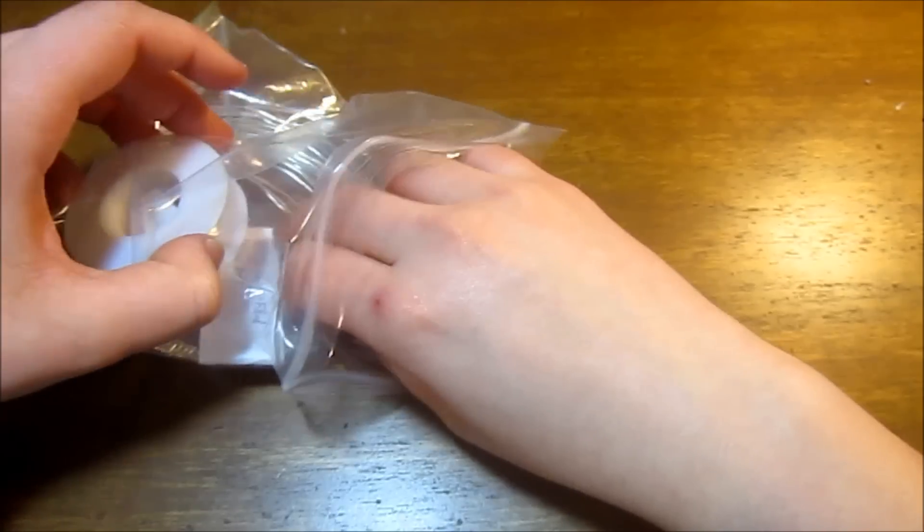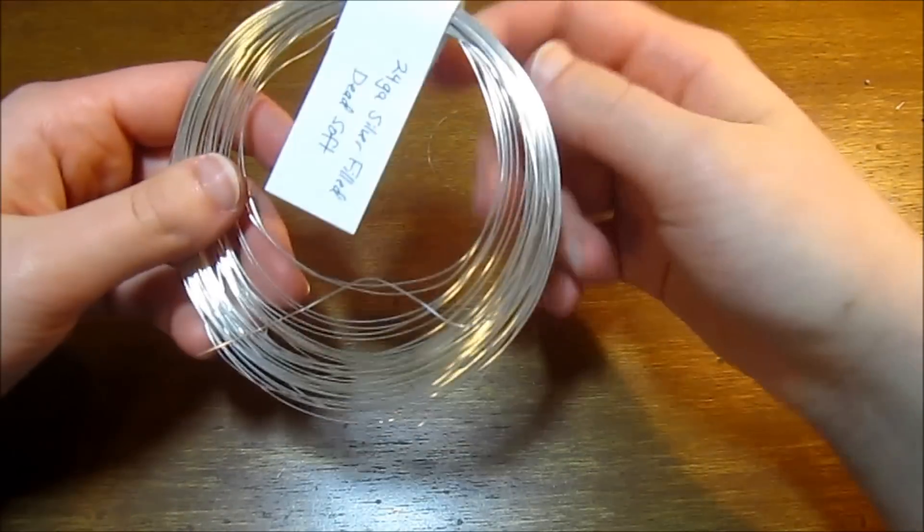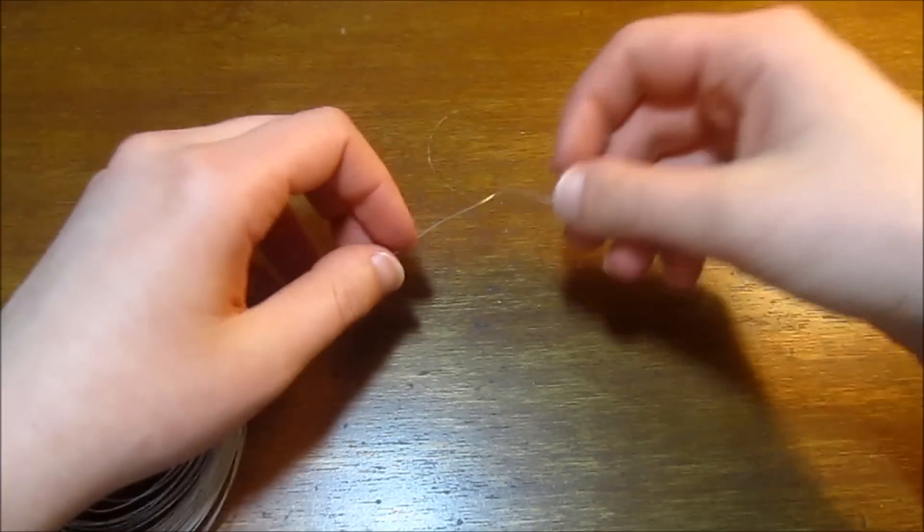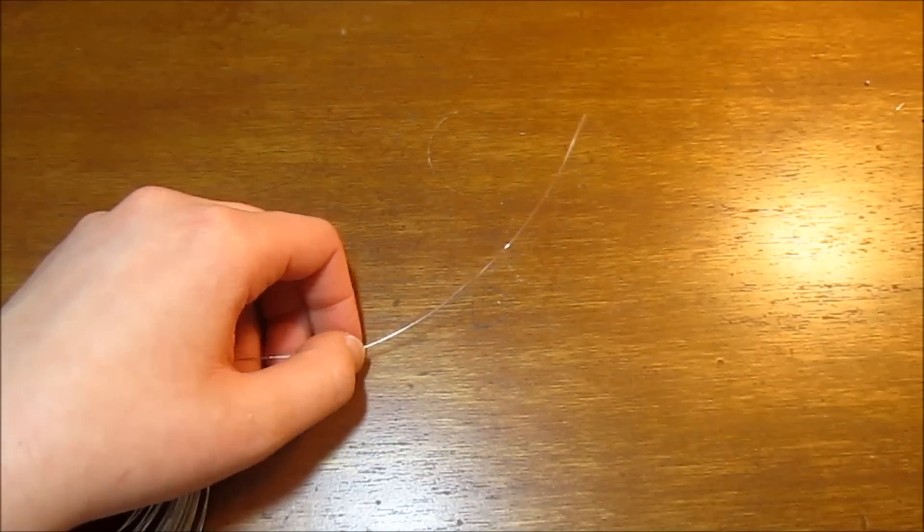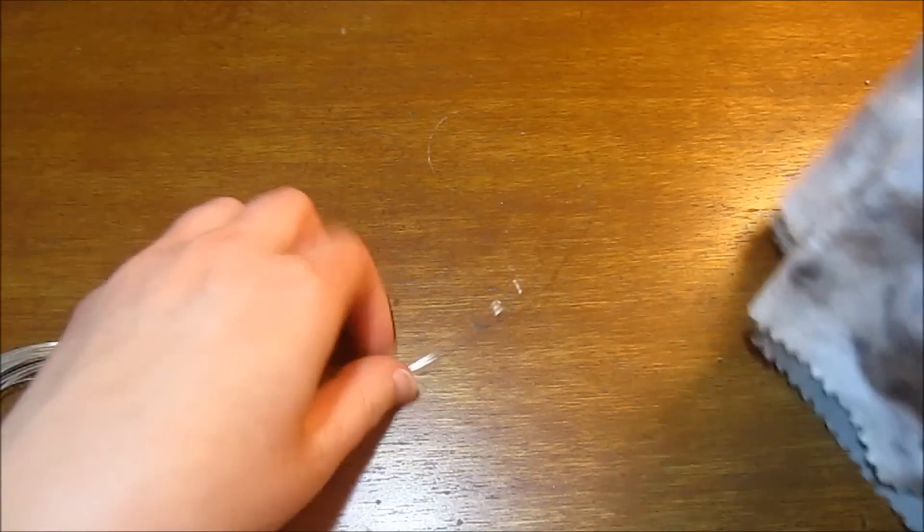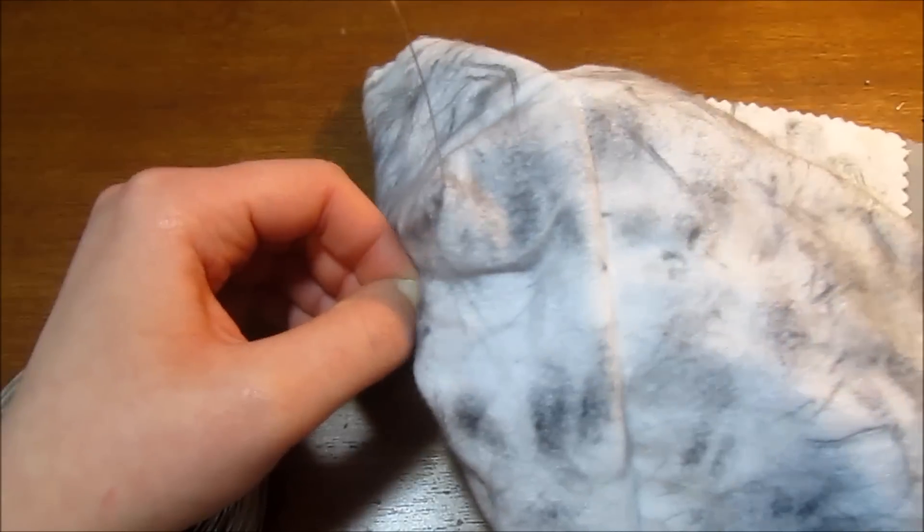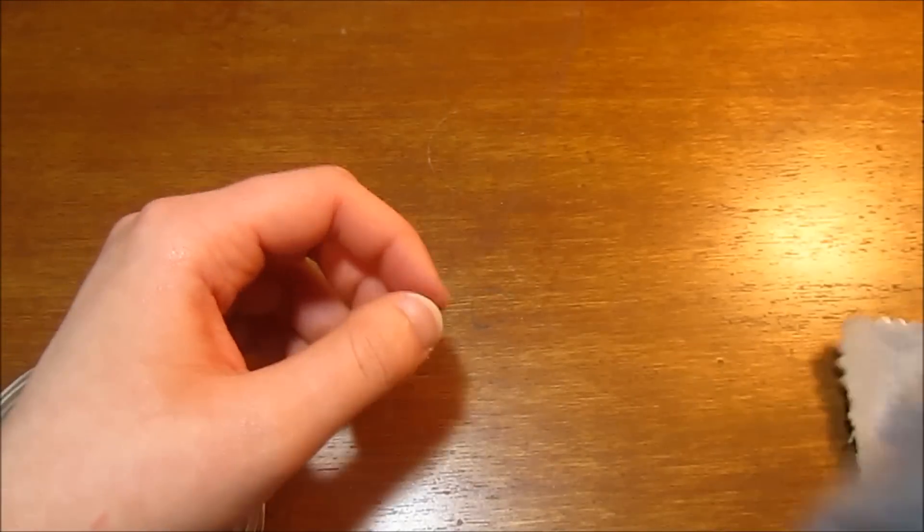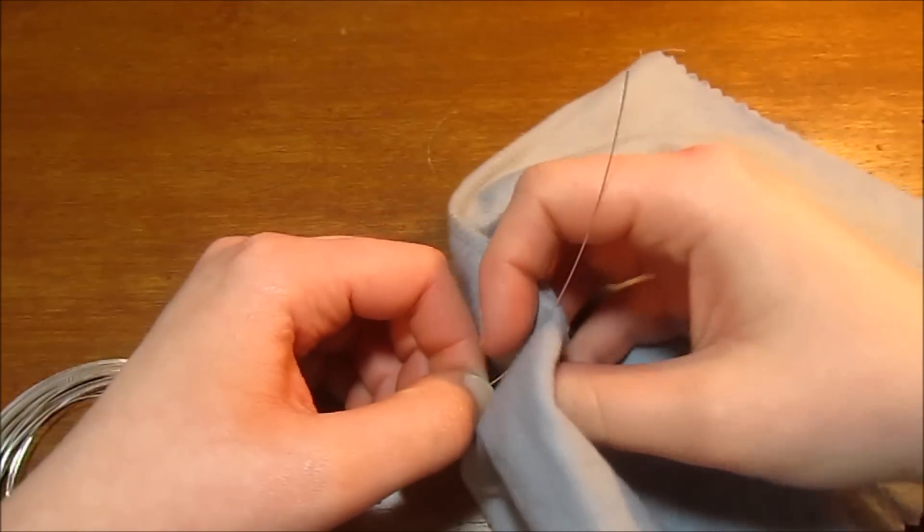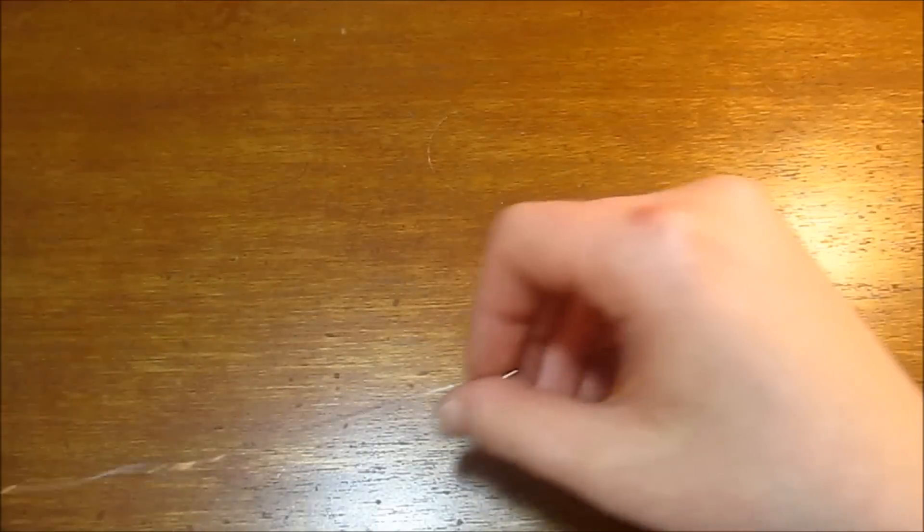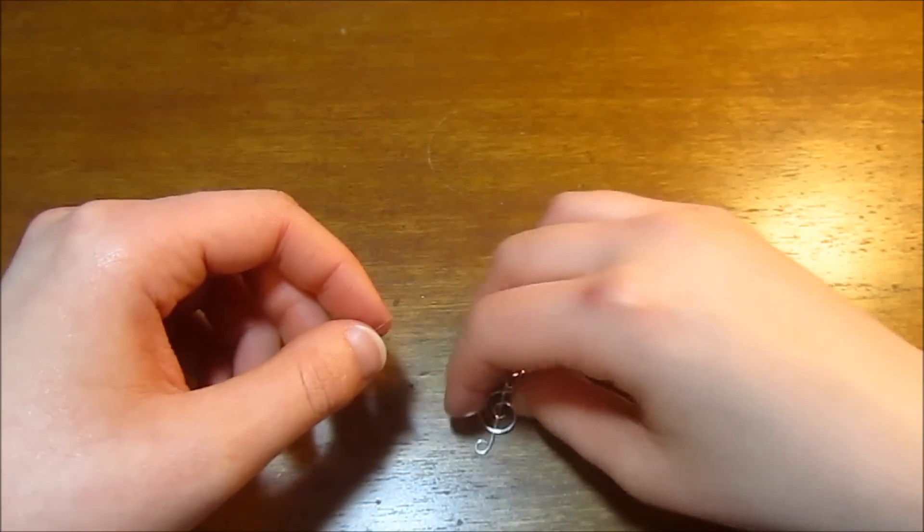I'm going to be using 24 gauge dead soft wire. If you're using smaller than 20 gauge for your bails, you'll want to use something smaller than 24 gauge, otherwise it would be too large to work for that. What I'm just doing here is using a tarnish removing cloth on my silver wire so that there's less polishing on the final piece. If you are not using silver wire, you don't have to do that.